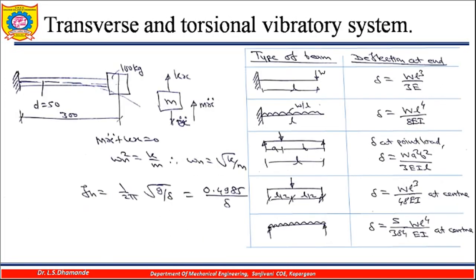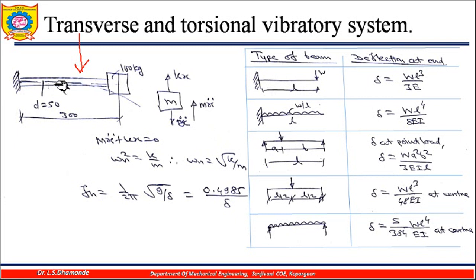Similarly, we will look at transverse vibrations and then torsional vibration systems. For transverse vibration, consider the simple example of a beam — a cantilever beam with a mass attached at its free end. In the free body diagram, the mass m has a force k times x acting upward. This stiffness k is the stiffness of the beam itself, which behaves like a leaf spring.